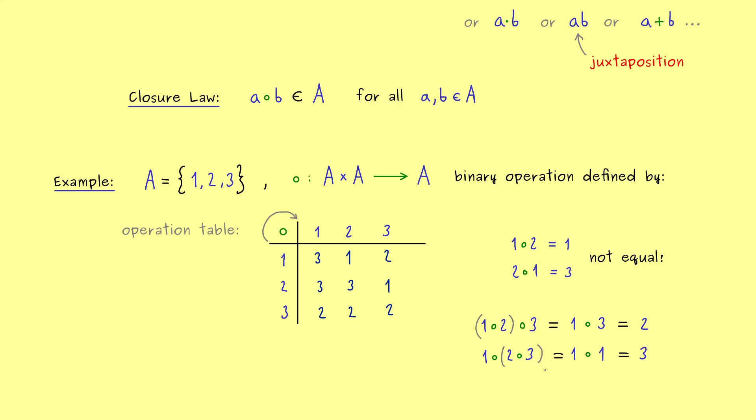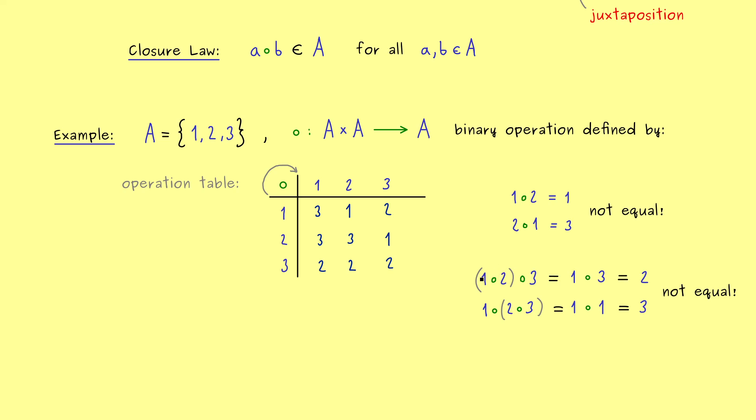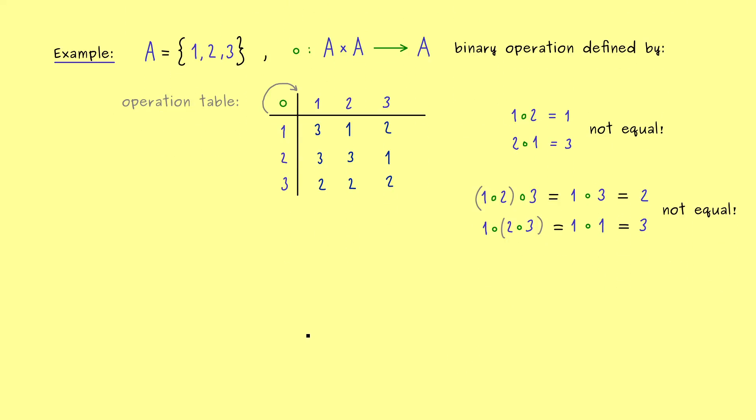This property does not hold in general. However, this is exactly the point of the video, because often we want binary operations where we can omit these parentheses. This means, if we don't change the overall order of the elements here, we should not change the result. In fact, this property we call associativity. And this immediately brings us to the notion of a semi-group.